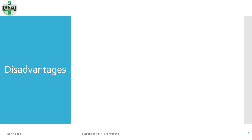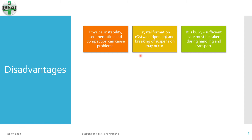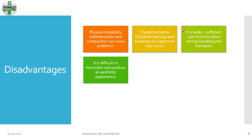For any formulation, a given set of advantages also have certain disadvantages. There are many instabilities in a suspension: physical instabilities, sedimentation problems, compaction problems, crystal formation like Ostwald ripening, and breaking of the suspension. These instabilities are very difficult to correct. Pharmaceutical suspension comes in a bottle made of glass or plastic, making it a bulky dosage form. Care must be taken during handling and transport, leading to less patient compliance. It is also difficult to formulate and produce an aesthetic appearance of a pharmaceutical suspension, keeping in mind these instability issues.